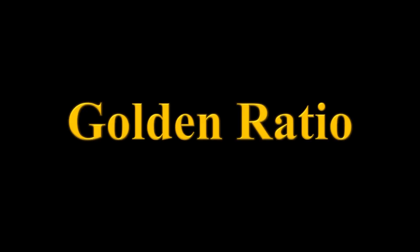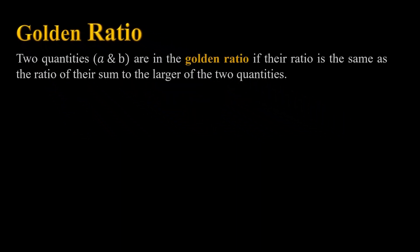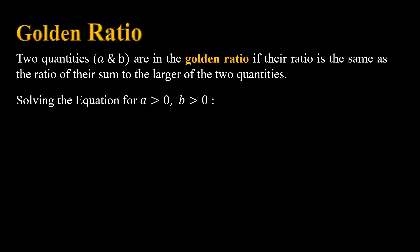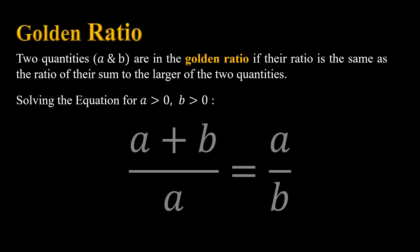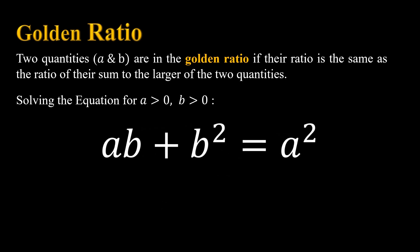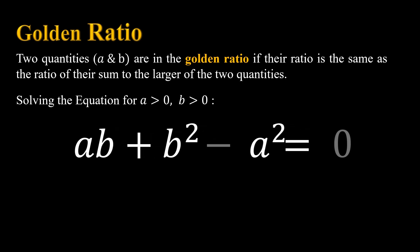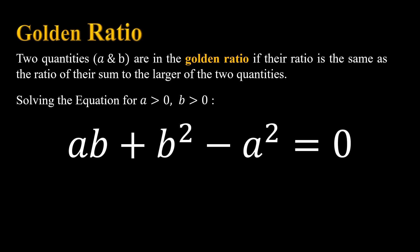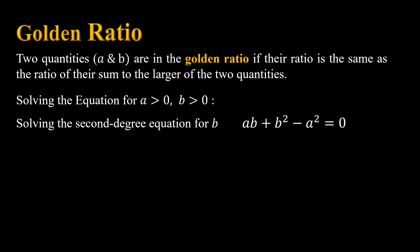Mathematically speaking, we define the golden ratio as follows. If you have two quantities A and B, we say that A over B is a golden ratio if it's equal to their sum over the largest quantity. Equation-wise, this would mean that A plus B over A is equal to A over B. We can go ahead and solve this equation by doing a cross-multiplication and then rearranging our terms, so we can find a second-degree equation on B, where A is a parameter — or we can also take A as the variable and B as a parameter.